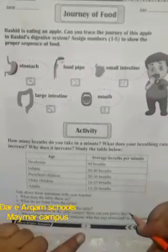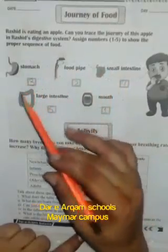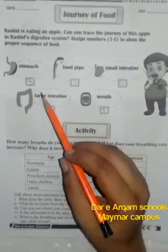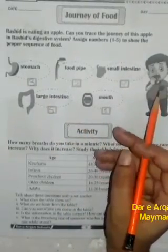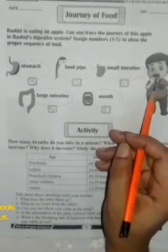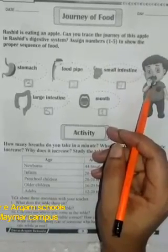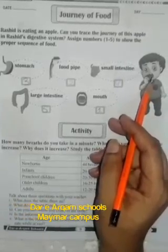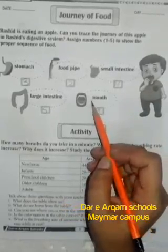Now come to page number 9. Here we have to label this diagram. We will mark this diagram from number 1 to number 5. Here Rashid is eating an apple, and we will write the journey of this apple in Rashid's digestive system. This journey will start from Rashid's mouth, where Rashid will take a bite of apple and start to chew it with his teeth. So we give number 1 to the mouth — from here the journey of the apple will start.